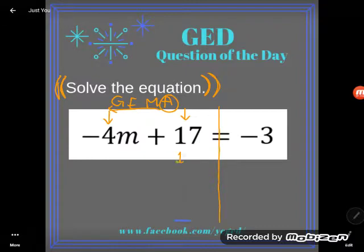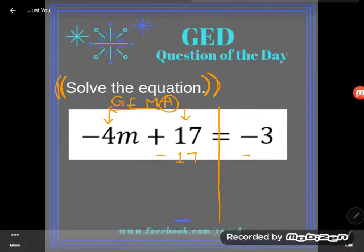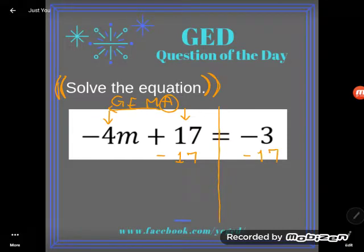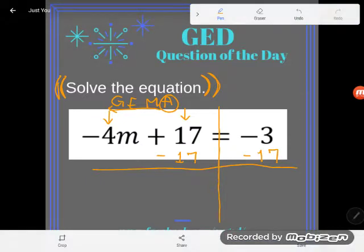So I'm going to move this 17 away by doing the opposite of adding 17. I'll subtract 17. Now of course as we've learned you can do whatever you want when solving as long as you do it to both sides.